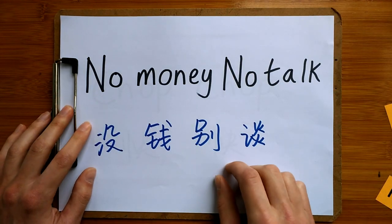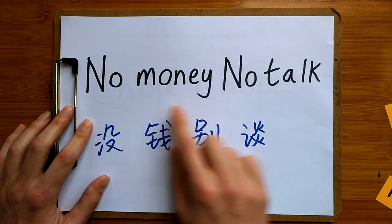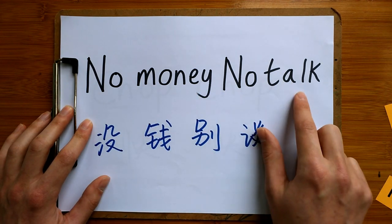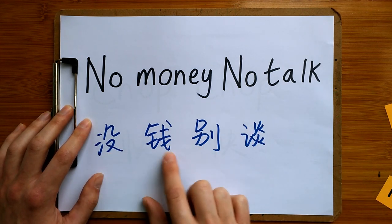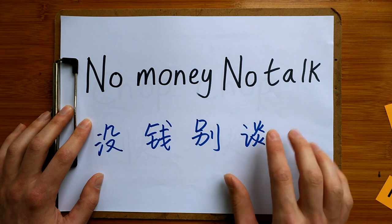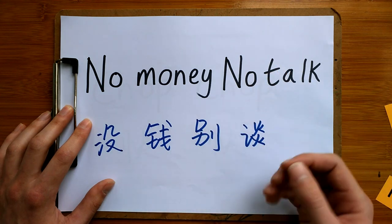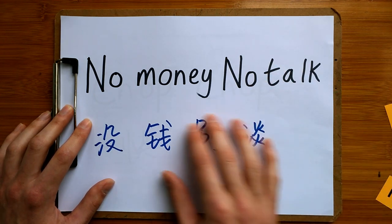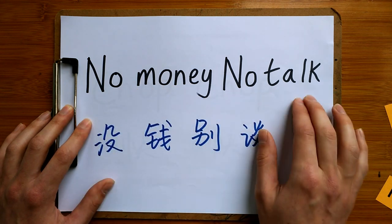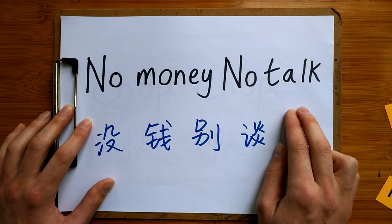The next one is "No money, no talk," which comes from the Chinese phrase 没钱别谈. This would have been a trader in China dealing with customers, and maybe the customers are trying to get a cheaper price. So they would have said "no money, no talk," which means: if I don't see the money, we can't talk about the price.